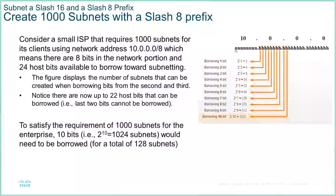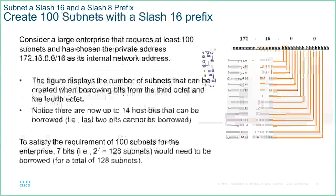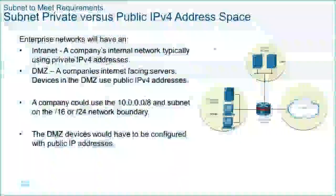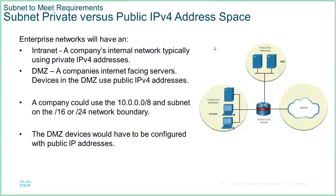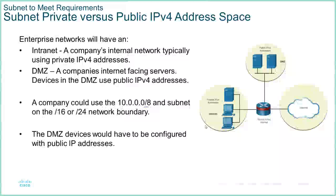We can take from a /8, /16, /20 — it doesn't matter what the parent is. We can always borrow from the host portion to create new subnets and networks. We do this using the /8, /16, /24 boundaries so that we can divide our networks into smaller, more manageable portions and apply different addressing or different functions within those portions of networks.